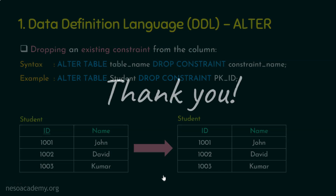That's it! In this session we have seen how to add a column to an existing table, how to drop a column, how to modify a column, how to add a constraint, and how to drop a constraint — all using the ALTER DDL command. I hope the session was informative. Thank you for watching.